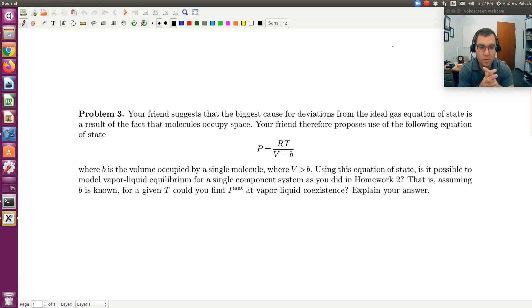And so the question is, using this equation of state, is it possible to model vapor-liquid equilibrium for a single component system as you did in chapter 2? That is, assuming B is known for a given T, could you find PSAT at vapor-liquid coexistence? Explain your answer. And so again this is another fun old exam problem where the idea was just to kind of get you thinking.